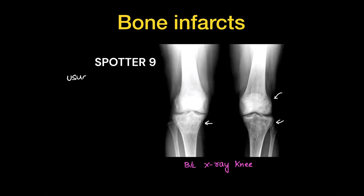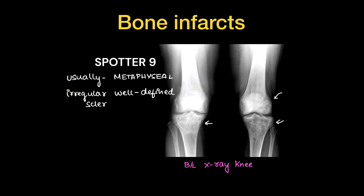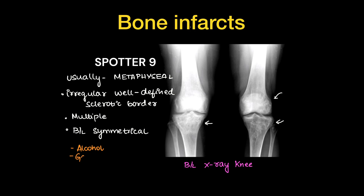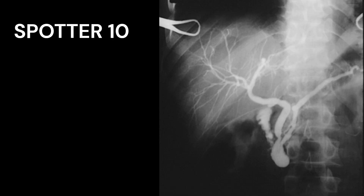This was an x-ray of a patient with SLE showing multiple bone infarcts, usually seen in the metaphyseal region. They are irregular with well-defined sclerotic borders, and multiple lesions are seen, bilaterally symmetrical. Risk factors include alcohol, Gaucher's disease, sickle cell anemia, SLE, granulomatous diseases, and steroid abuse.